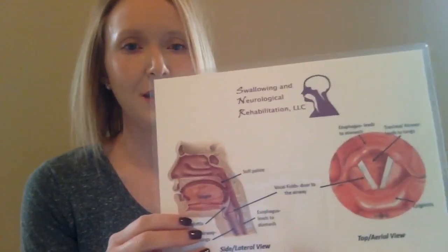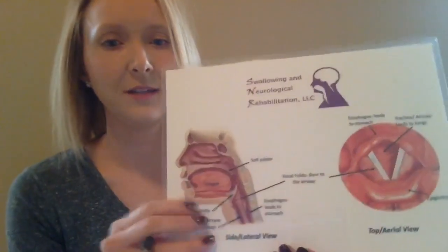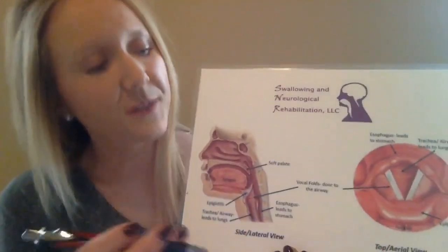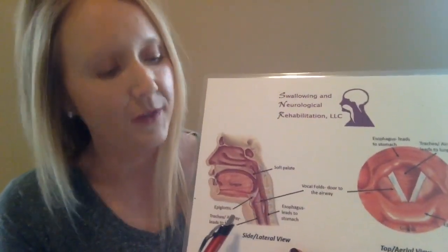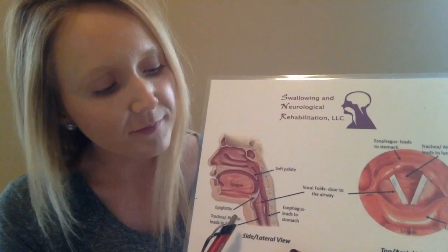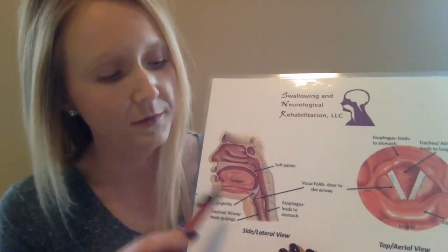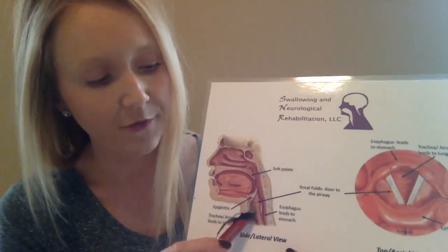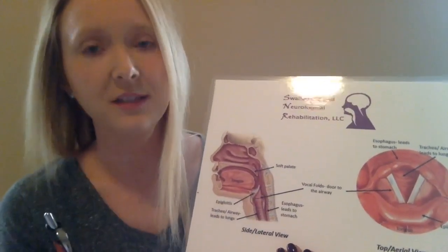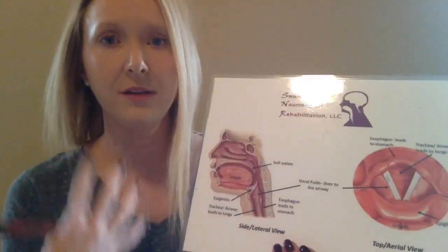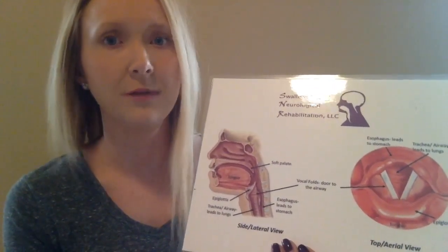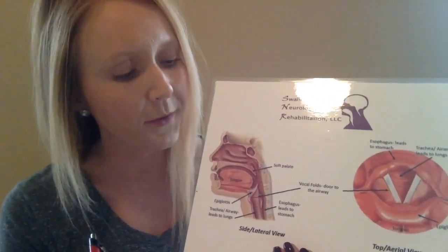I'm going to explain that to you today and tell you what great things we can see on that. So first we'll look at the side view of the anatomy. In our throat we have two tubes. The front tube is our airway — that's the trachea that leads to our lungs. This is where we don't want anything to go when we swallow.